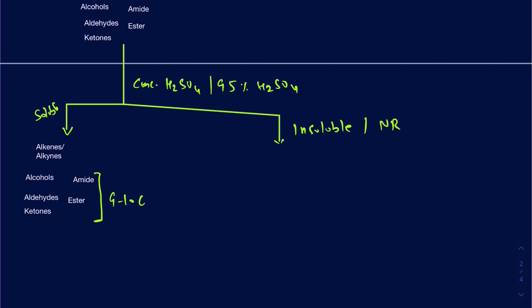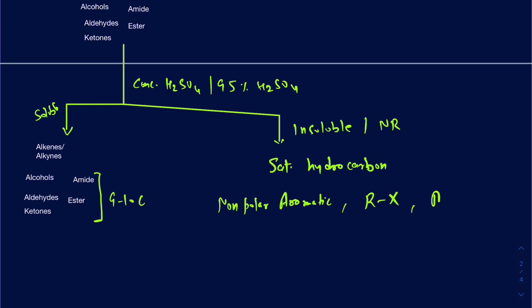But if the compound doesn't react with sulfuric acid at all, what could you possibly have? You could have a saturated hydrocarbon like some sort of alkane. You could even have non-polar aromatics — aromatics without any functional groups on them. And in addition to that, you could have alkyl halides and even aryl halides in this category, because they wouldn't really react with anything and they wouldn't dissolve in water either.